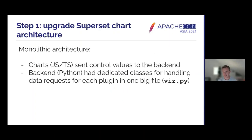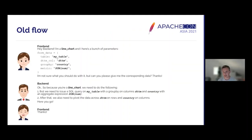The original Superset architecture was very monolithic by nature. Charts were written in JavaScript and TypeScript. When you're in the Explorer view, selecting group-by fields and metrics, those control values were sent over to the backend along with the chart type. The backend knew exactly what to do with those requests — there was a one-to-one mapping where line charts did this kind of processing, pie charts did that kind of processing. This was very convenient for the front-end developer, who just offloaded chart metadata to the backend.